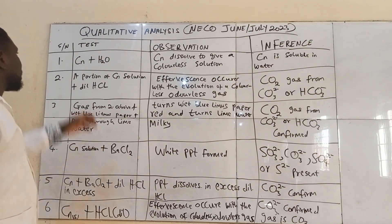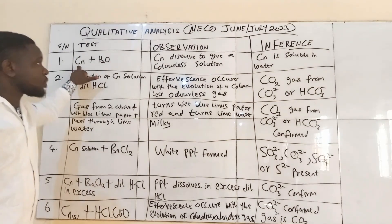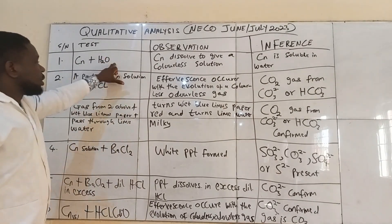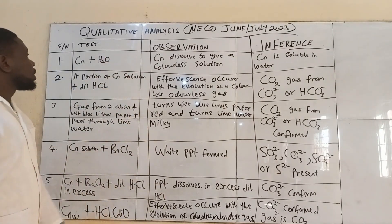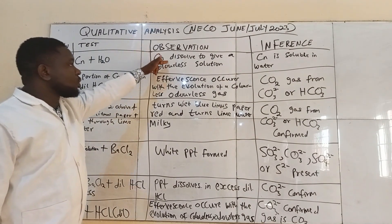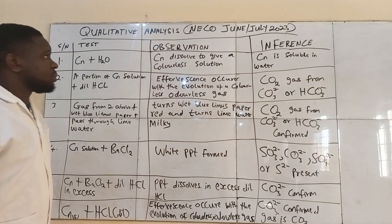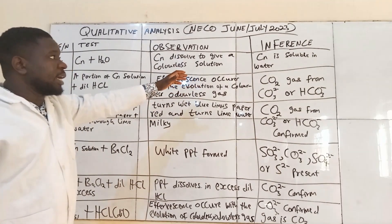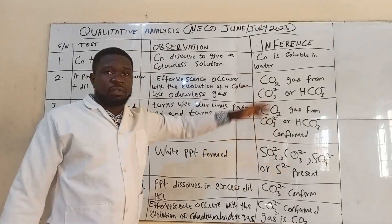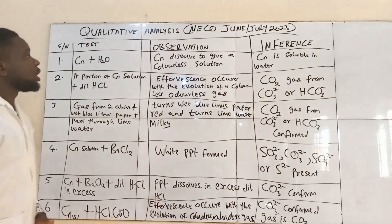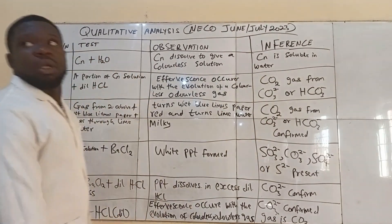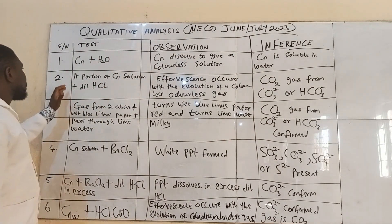In the first test, you bring a sample of the salt and then you add water to it and shake it to try to dissolve it. You will notice that the salt will dissolve in the water to give a colorless solution. The inference will be that the salt is soluble in water.